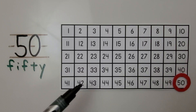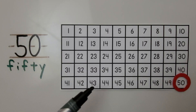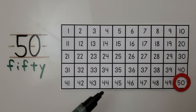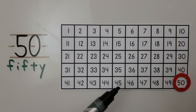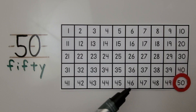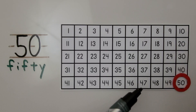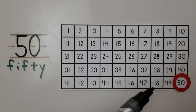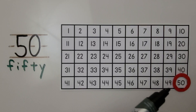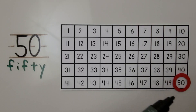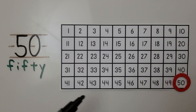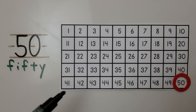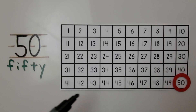41, 42, 43, 44, 45, 46, 47, 48, 49, 50. And if this chart continued, we would know that the numbers would start with a 5.